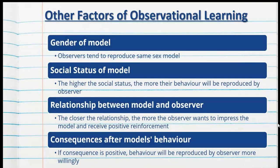There are other factors of observational learning that may increase or decrease its likelihood. The gender of the model was seen as a very significant factor in the Bobo Doll experiment. Children were far more likely to reproduce the observed behaviour, especially if they were the same gender as the model — observers tend to reproduce the same-sex model's behaviour.